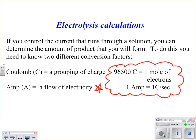A coulomb is just a grouping of charge, and an amp is a flow of electricity. You talk about this stuff a whole bunch in physics next year, but this just kind of gives you a little bit of a taste. So if we know we have this group of charge, we have this value, 96,500 coulombs, that's going to equal one mole of electrons. So that's one value we need to know. And then the other thing we need to know is that one amp is the same thing as one coulomb per second.